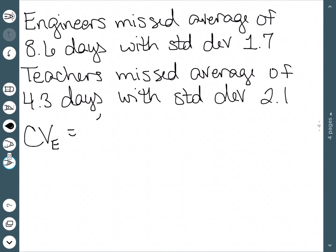We take our standard deviation divided by the mean times 100%. And when we do this, 1.7 divided by 8.6, we get 19.8% coefficient of variation.